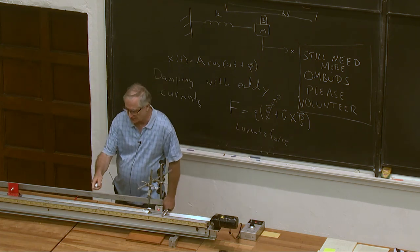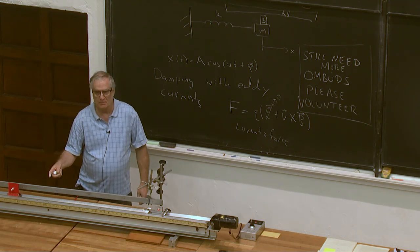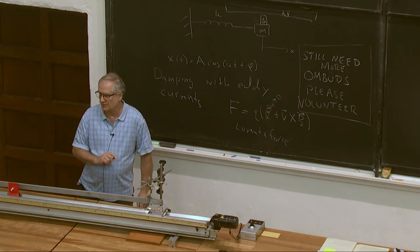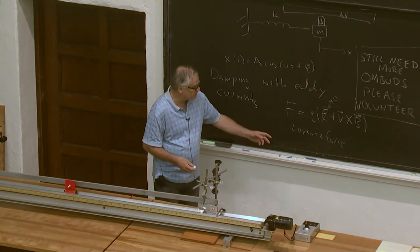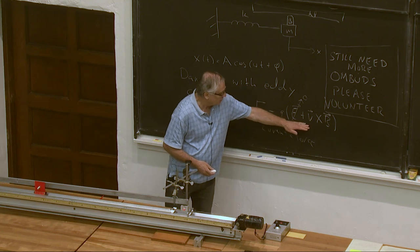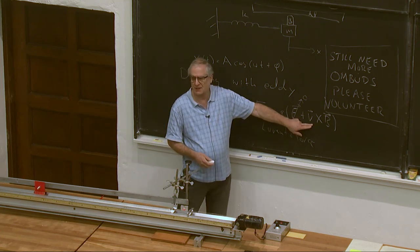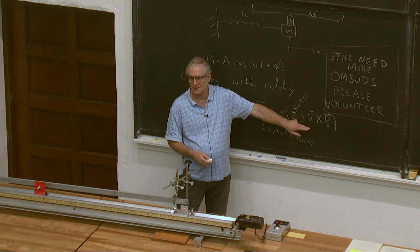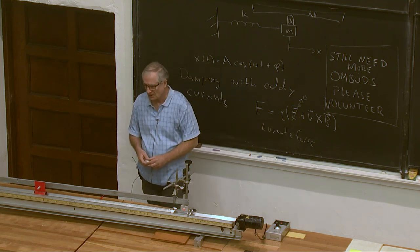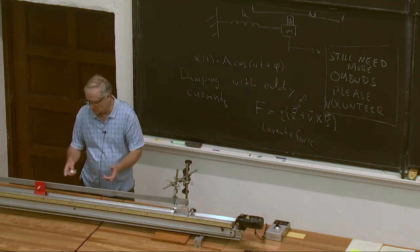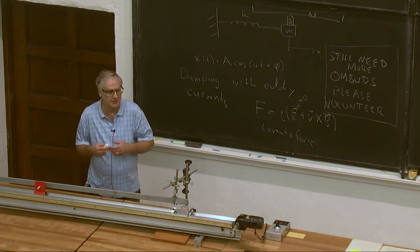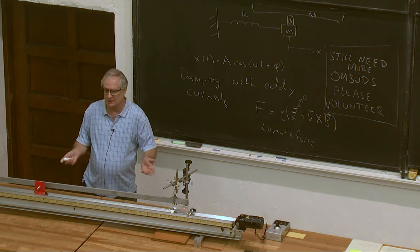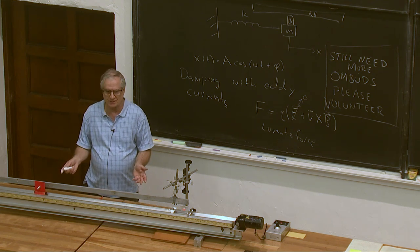So, the force on these charges in this bar are going to make the electrons move. And so, the electrons move under a force that's proportional to the velocity. And when these electrons move with the aluminum, it's not a superconductor. It's a regular conductor. It's a very good conductor. But it's not a perfect conductor. They're going to dissipate energy in the resistance of the bar.